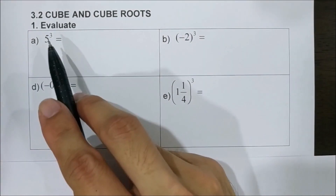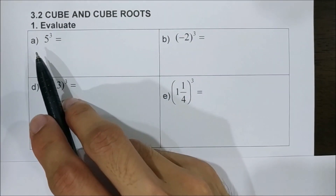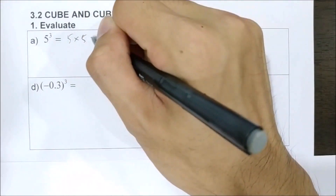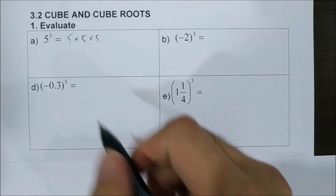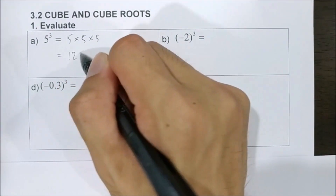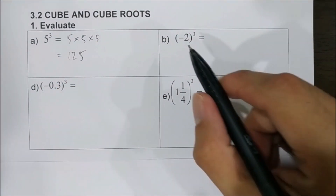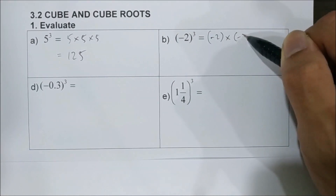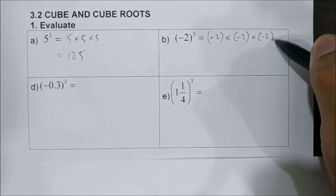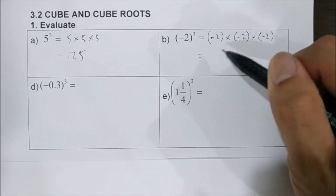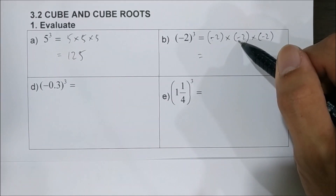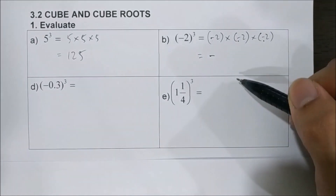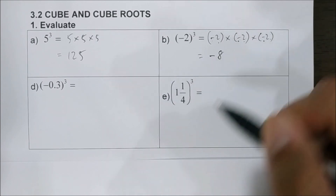First, evaluate 5 cubed. So 5 cubed means 5 times 5 times 5, which gives 125. Negative 2 cubed means negative 2 times negative 2 times negative 2. Negative times negative is positive, then times negative again gives a negative answer: 2 times 2 times 2 is 8, so the answer is negative 8.